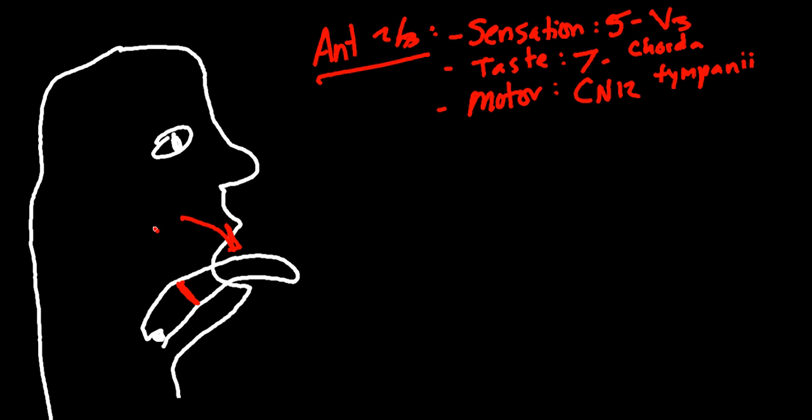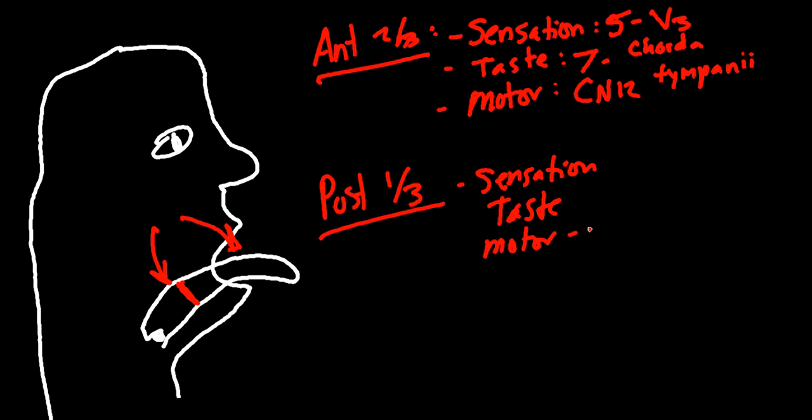So we've covered the anterior one-third. Now let's talk about the posterior one-third. So posterior one-third of the tongue. Again, we've got sensation. We've got taste. And we've got motor. Like I said, motor is going to be cranial nerve 12. Easy. Taste and sensation are going to be innervated by the same thing now. Now that we're referring to the posterior one-third, we're going to be dealing with cranial nerve 9. It's cranial nerve 9, the glossopharyngeal nerve. So glossopharyngeal, cranial nerve 9.